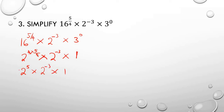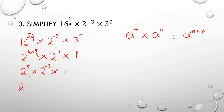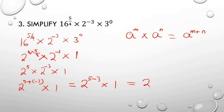So I'm having 2 raised to power 5 times 2 raised to power minus 3, times 1. Applying the multiplication law — same base, add the powers — I take base 2 and add the powers: 5 plus minus 3 times 1. That gives 2 raised to power 5 minus 3, which is 2 raised to power 2. 2 raised to power 2 is 4, so the answer is 4.